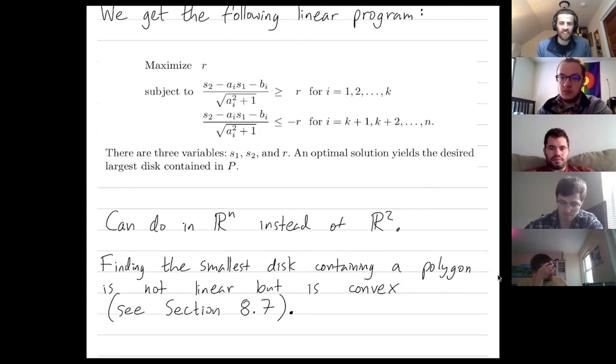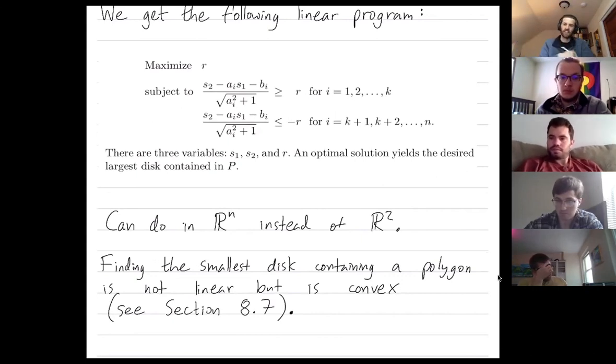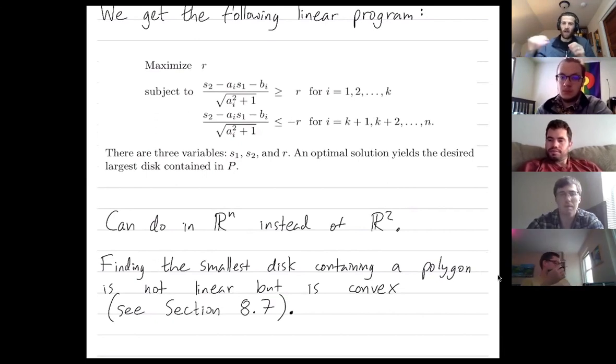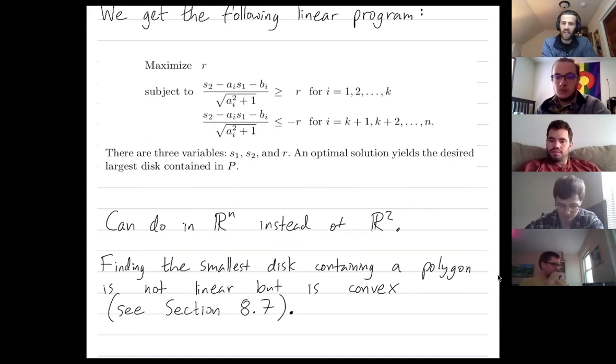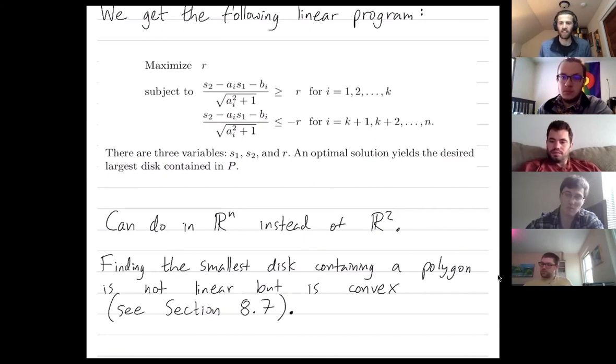Two comments to end. You can do this in n-dimensional Euclidean space. So you can have a polytope and you can find the largest sphere inside your polytope. A related problem would be given a polygon, find the smallest disk that contains that polygon. It turns out you can't set that up as a linear program. I'm trusting our book on this. You can try it and maybe see why you fail. You can set it up as a convex problem, which can still be efficiently solved, just not as easily as linear programs. Section 8.7 of Kleinberg-Tardos-Éva Gardner talks about convex optimization.